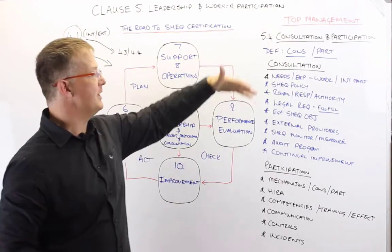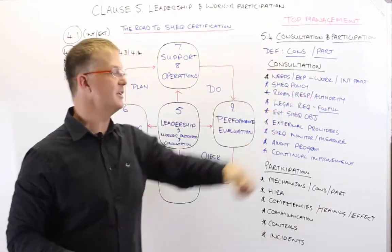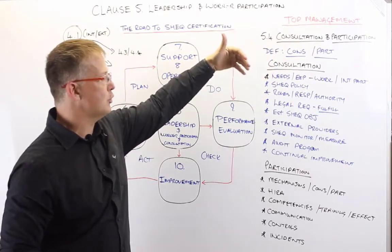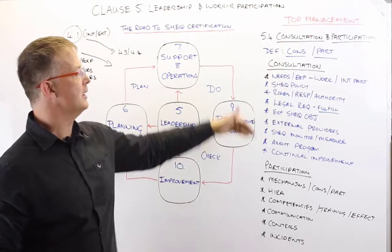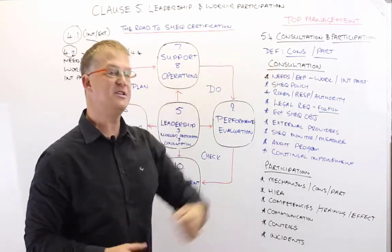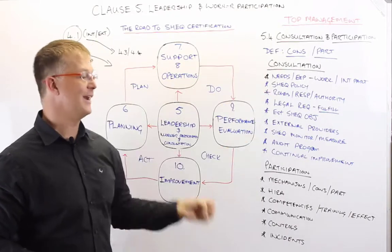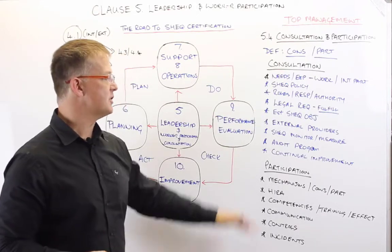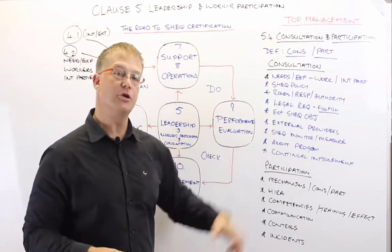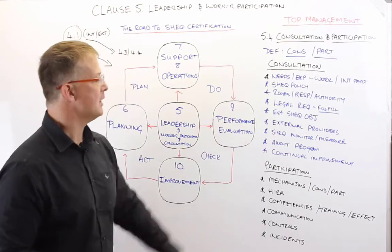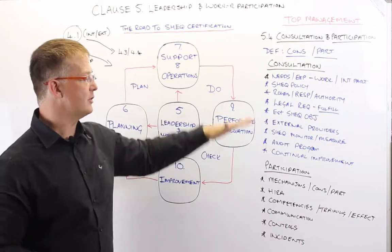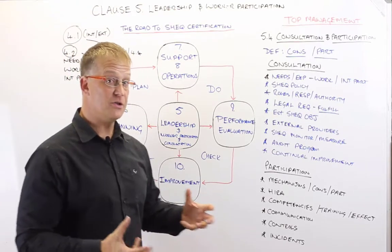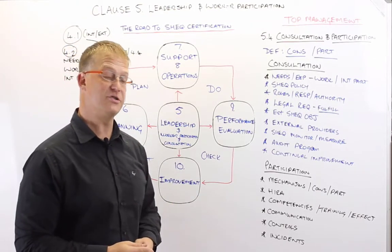Workers are required to be consulted on the needs and expectations of workers and interested parties. They're required to be consulted on the determination and establishment of your OH&S policy and the various commitments that you make. They must be consulted on roles, responsibilities, and authorities; on legal requirements and how the organization is going to fulfill them. They should be consulted on the establishment of OH&S objectives, on the management or controls of external providers, contractors, and outsourcing; on your OH&S monitoring and measuring; on your auditing program; and also on continual improvement. So you can see there's a large amount of consultation that should take place with regards to workers.